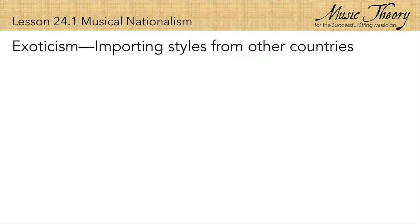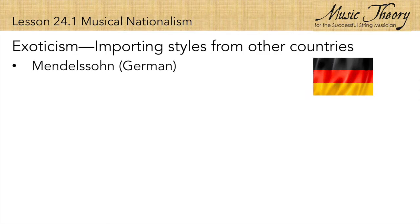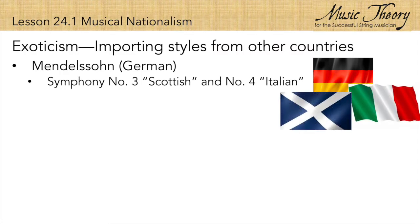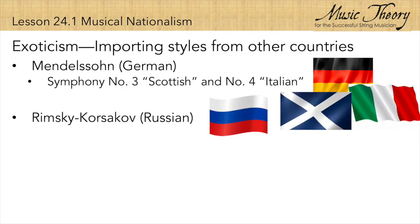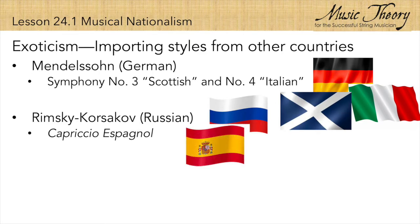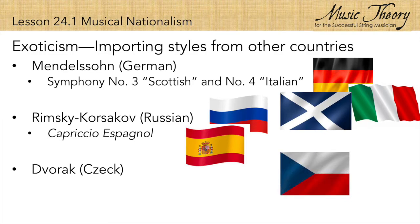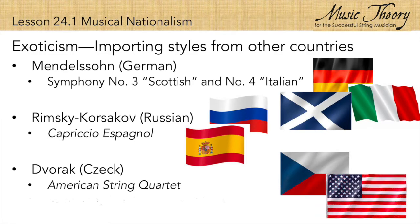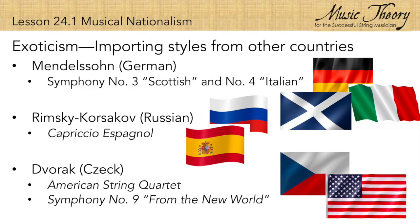For example, Mendelssohn, a German composer, wrote a Scottish Symphony and an Italian Symphony. Rimsky-Korsakov, a Russian composer, wrote Capriccio Español. And Dvořák, a Czech composer, wrote an American String Quartet and also the New World Symphony.